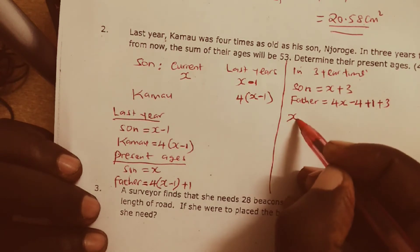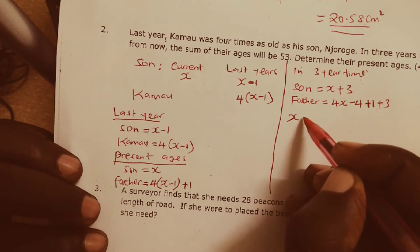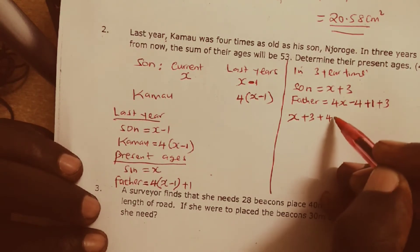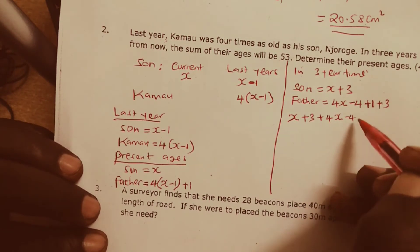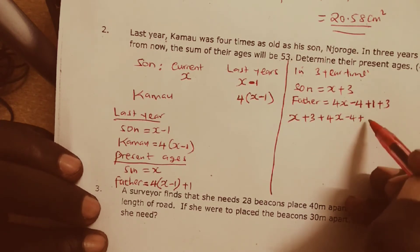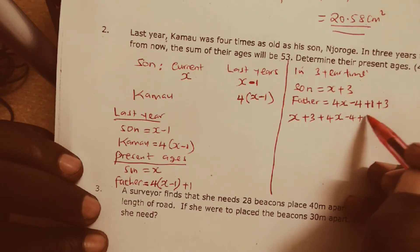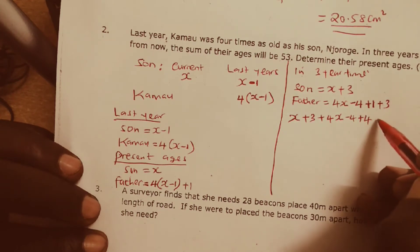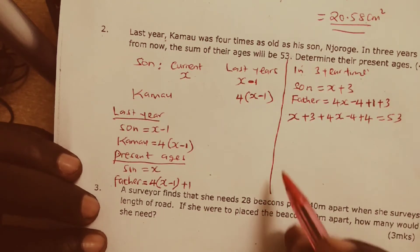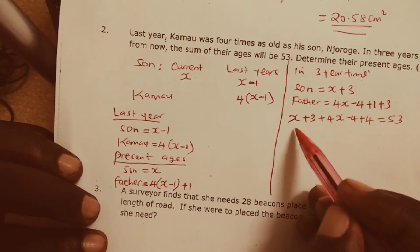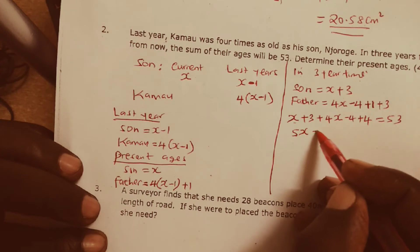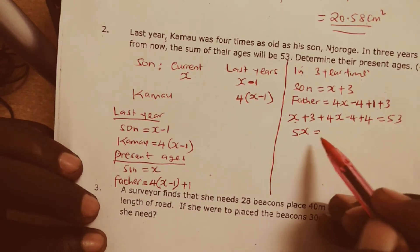That means if we take the age of the son three years to come, X plus 3, then we add the father in three years' time, which is 4X minus 4 plus 4. This is going to be equal to 53. From there we move forward: X plus 4X will give us 5X.